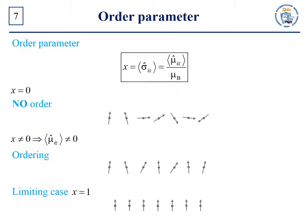Denote the order parameter x as the mean magnetic moment of an atom. In the case of the absence of order, x is equal to zero because the magnetic moments have chaotic orientation and the mean magnetic moment — the total moment divided by the number of moments — vanishes. If the magnetic moments have a preferred orientation, then x is not equal to zero and order is present.